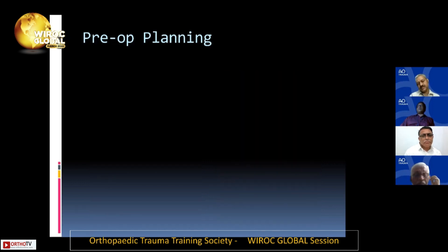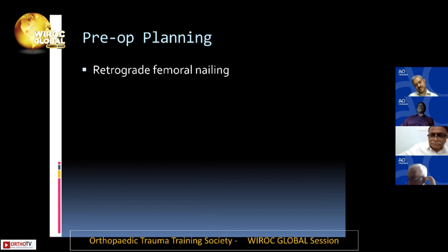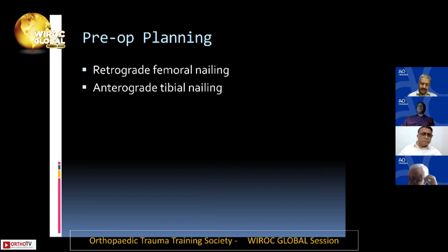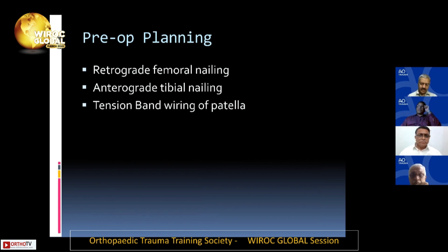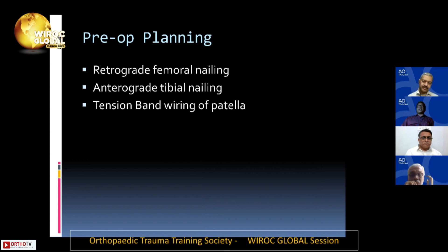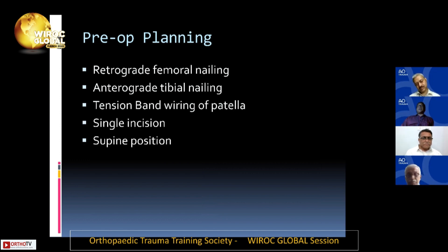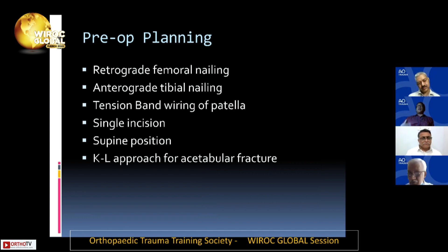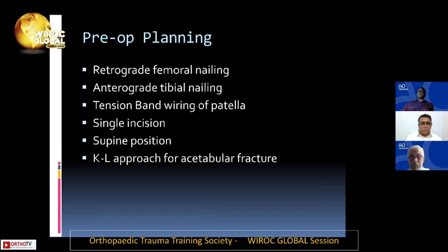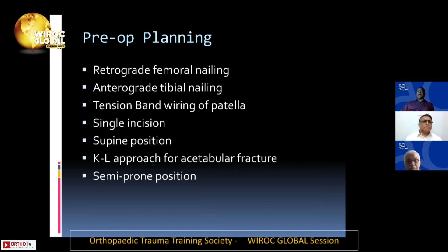In preoperative planning, we chose a single incision — retrograde femoral nailing and anterograde tibial nailing — and tension band wiring for the patellar fracture. We performed the retrograde femoral nailing first due to high chances of soft tissue injury, followed by anterograde tibial nailing using an unreamed nail, and tension band wiring of the patella at the end. For the acetabular T-shaped fracture, we used a Kocher-Langenbeck (KL) approach, changing the position to semi-prone accordingly.